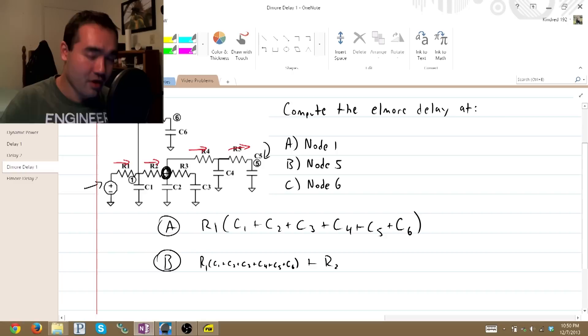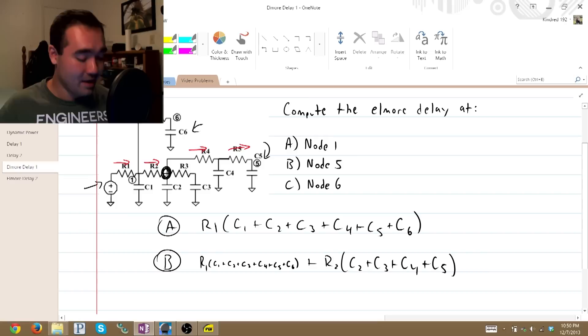Plus, now we're looking at R2. R2 times everything downstream from this node, which is C2, C3, C4, C5. And that's it. Notice C6, not downstream. C1, not downstream. We don't write them down.